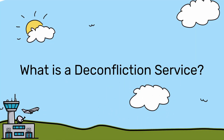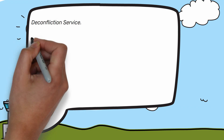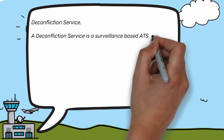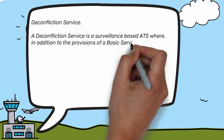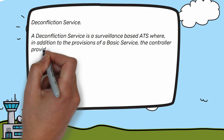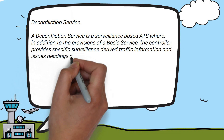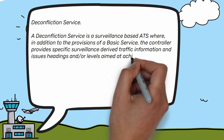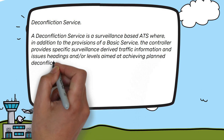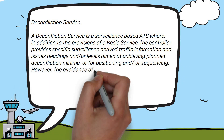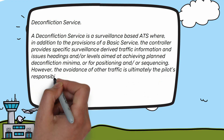What is a deconfliction service? A deconfliction service is a surveillance-based air traffic service. In addition to the provisions of a basic service, the controller provides specific surveillance-derived traffic information and issues headings and levels aimed at achieving planned deconfliction minima, or for positioning or sequencing.